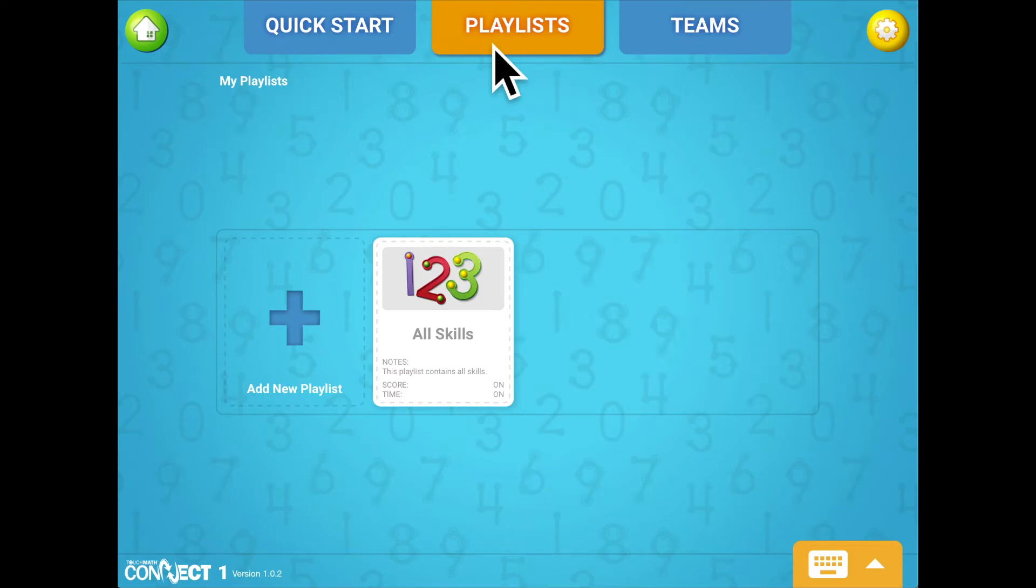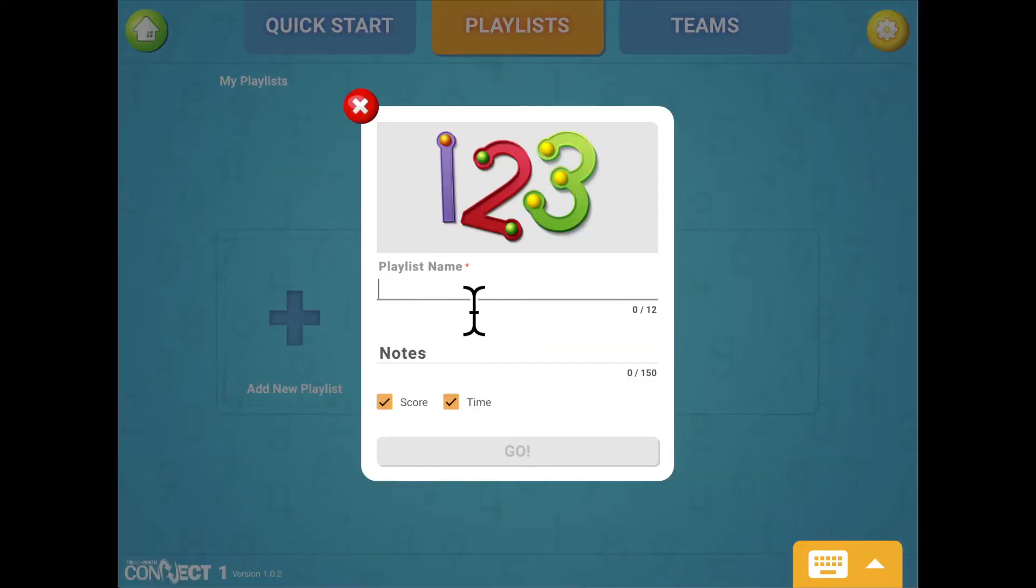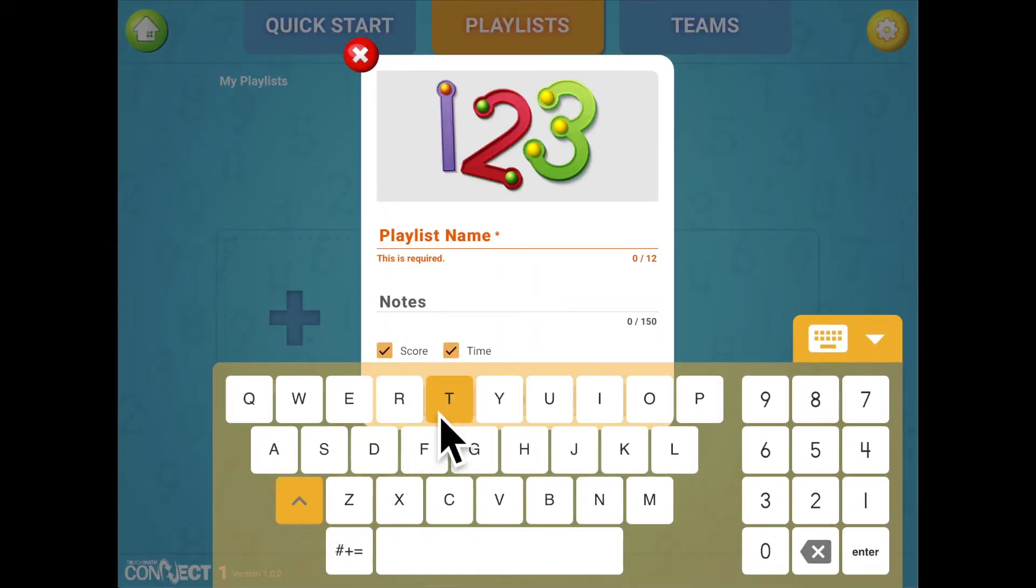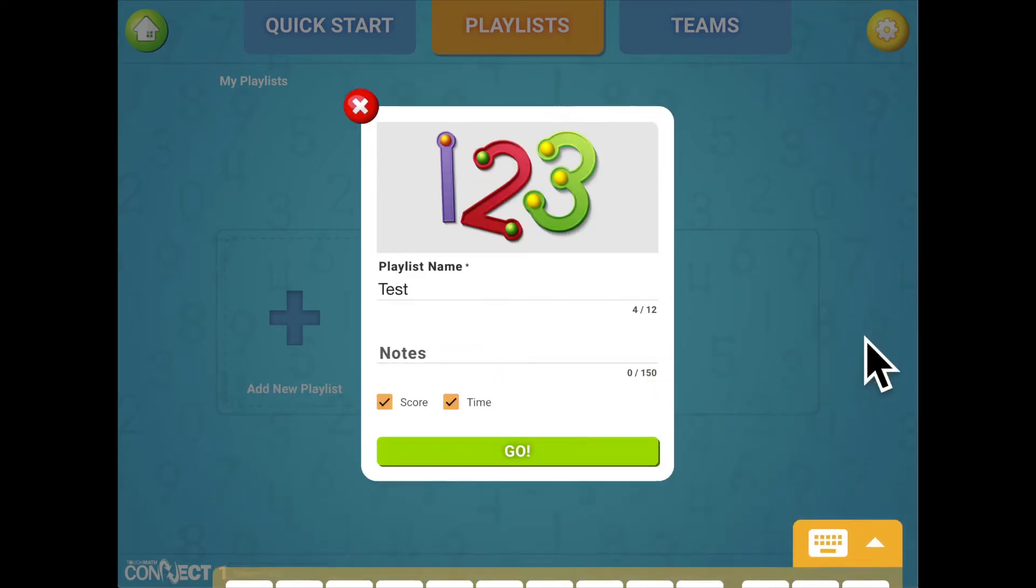Select the Playlist tab to create customized sets of activities for whole class, small group, or individual student instruction. Click Add New Playlist, name the playlist, and then click the Go button.